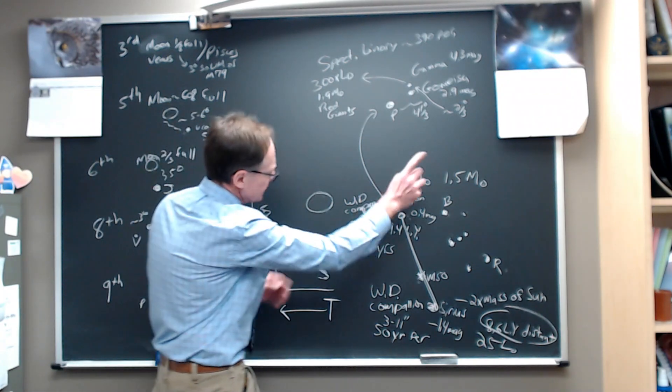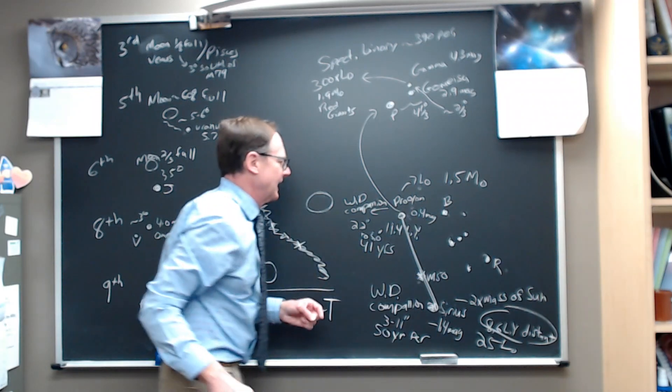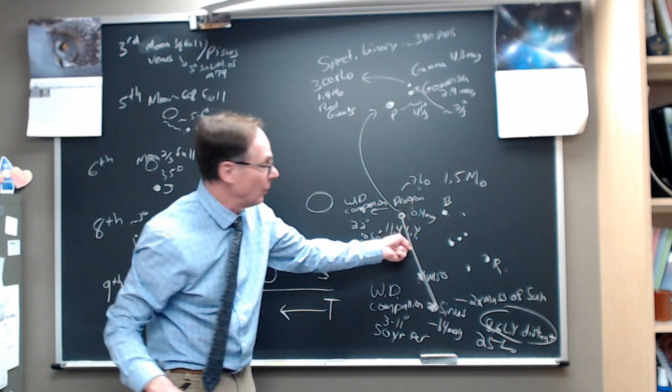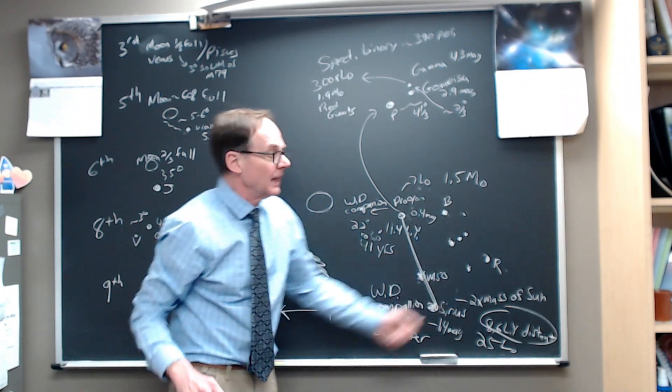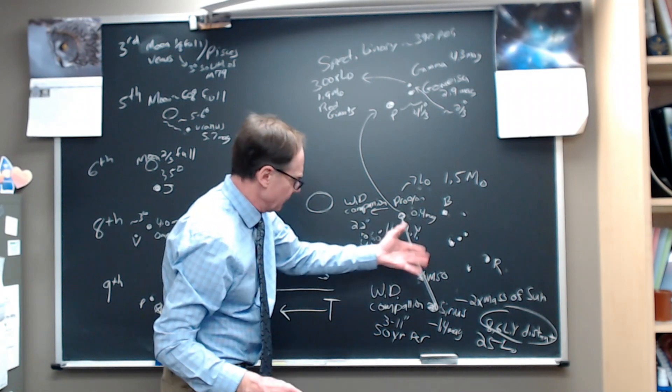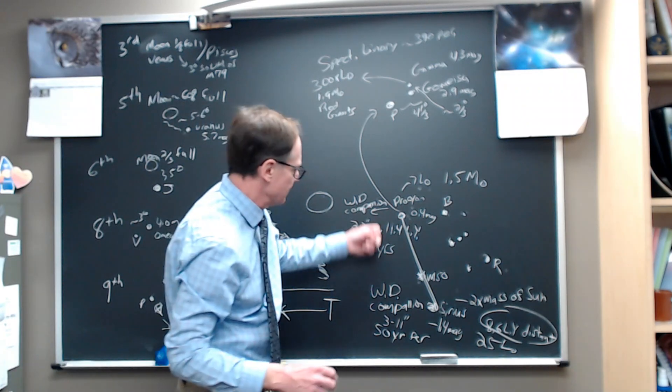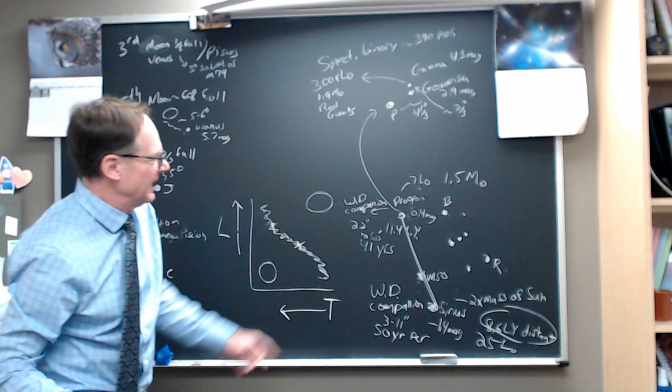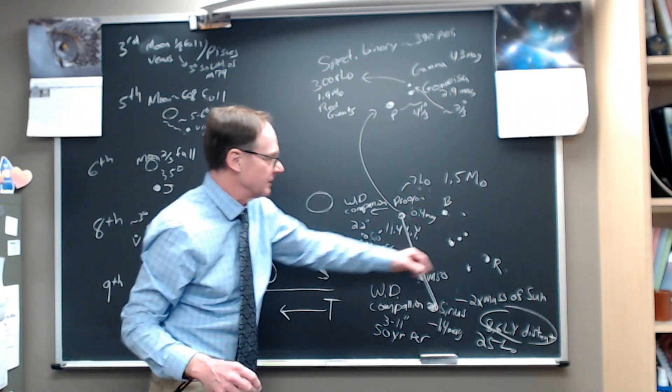Now, interestingly, let's look at Procyon first. It's about seven times the luminosity of the sun, and it's about 11 light-years, about almost one and a half times farther away, not quite. It's about three times less luminous. And so those things combine to make it significantly 0.4 magnitude, six, eight, ten times less bright on the sky than Sirius is. It's about one and a half times the mass of the sun. So it's halfway between the sun and Sirius in mass.